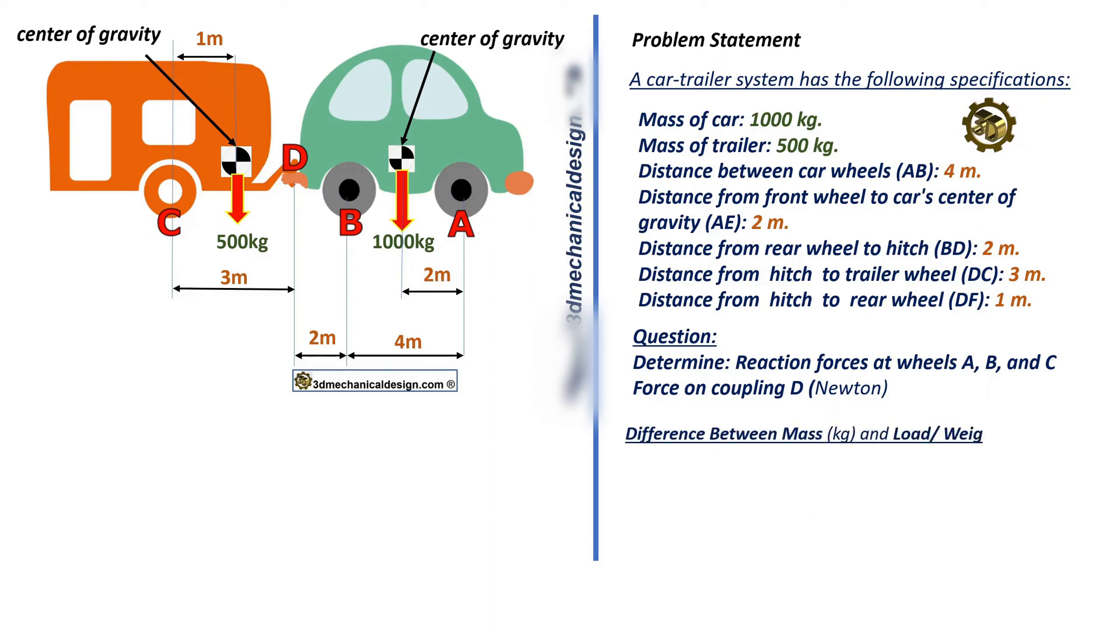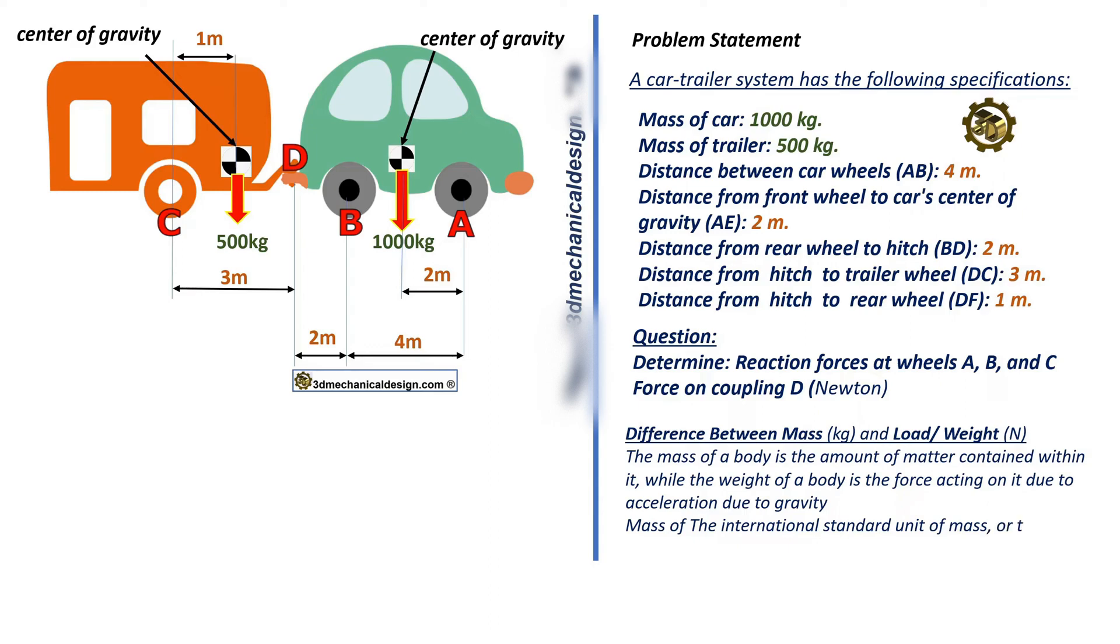Difference between mass (kilogram) and load weight (newton). The mass of a body is the amount of matter contained within it, while the weight of a body is the force acting on it due to acceleration due to gravity. The SI unit of mass is the kilogram. Weight is a measure of force. The SI unit of weight is newton.